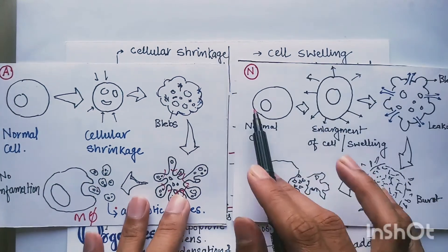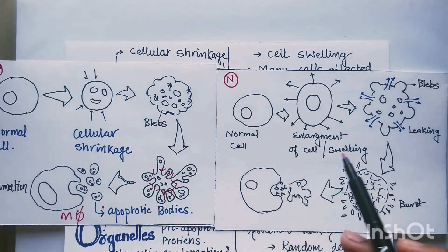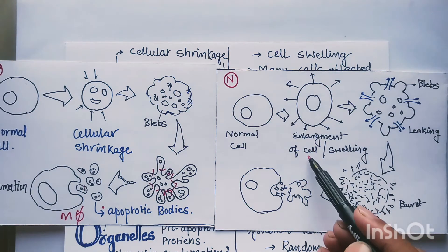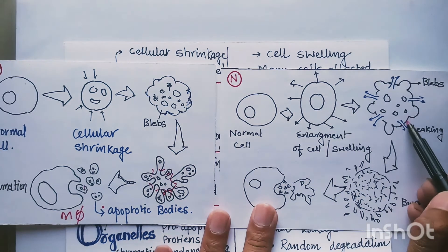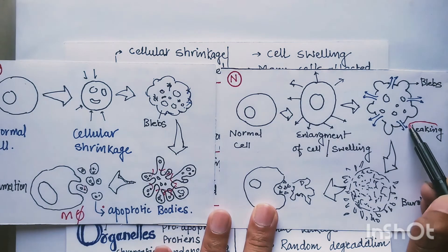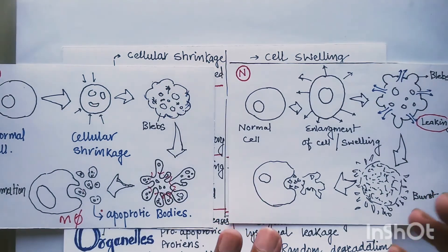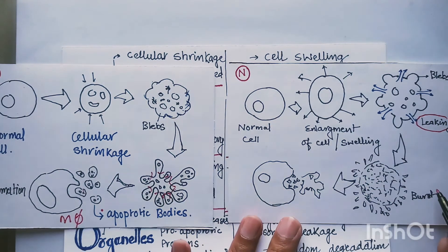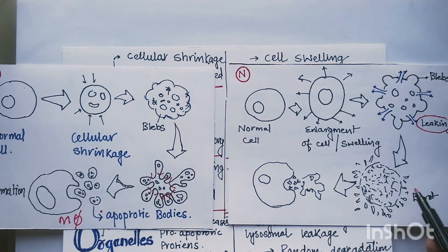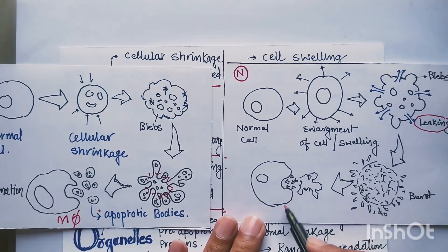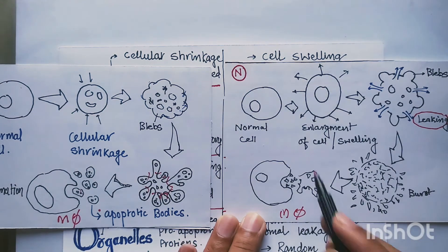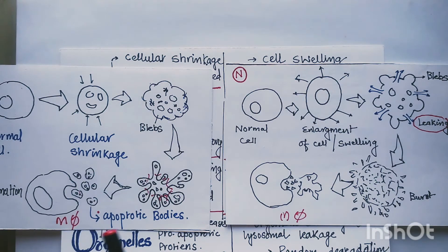Whereas in necrosis, starting from a normal cell, there is enlargement and swelling of the cell, and membrane integrity is not maintained. The membrane becomes leaky. There are also blebs, but because the membrane becomes leaky, the cell will ultimately burst or there will be degradation of the whole cell. It will be taken up by macrophages. Necrotic products cannot be taken up by neighboring cells. These are the cellular changes between apoptosis and necrosis.